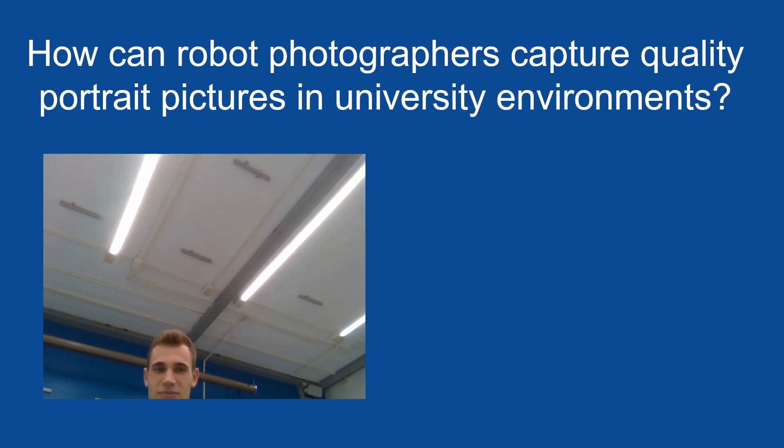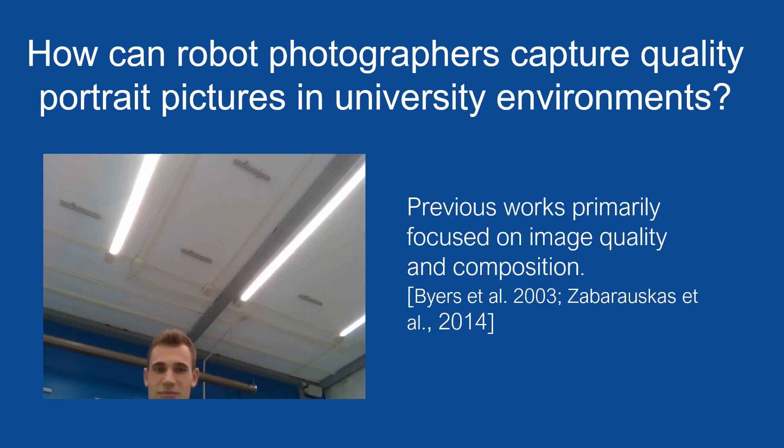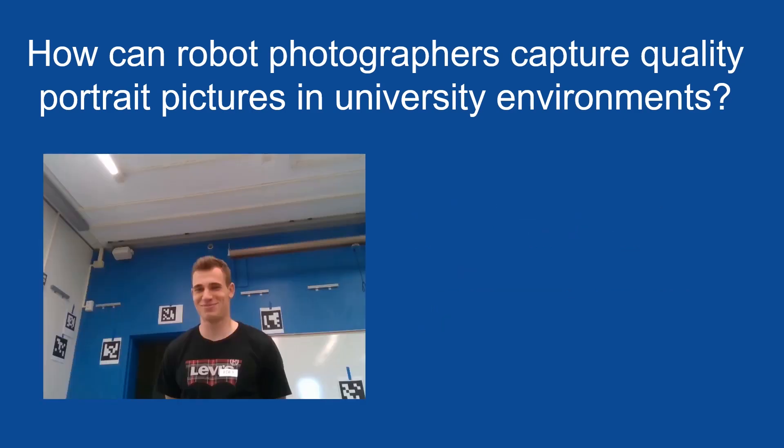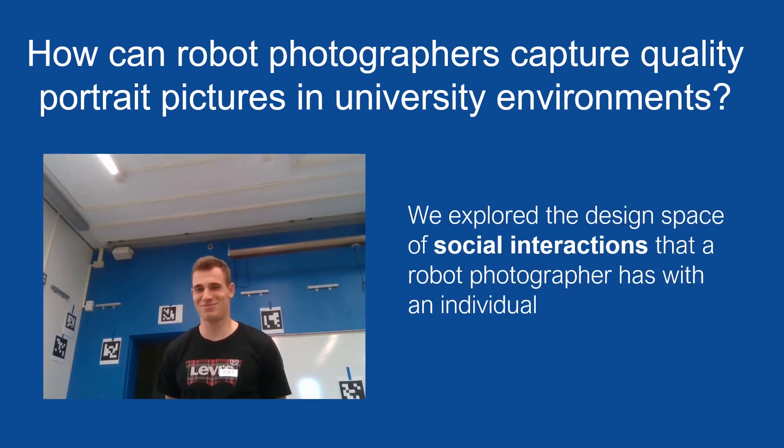One idea is to advance technical aspects of robot photography and enable these machines with the notion of image quality. This has been the focus of most prior work in robot photography. For example, prior work has explored questions such as how can robots take well-composed pictures of people, considering things such as the no middle rule, the rule of thirds, and the golden rule. Our research, however, explores the design space of the social interactions that a robot photographer has with individual photography subjects. We recognize the significant opportunity that this design space provides to complement the technical focus of previous work.